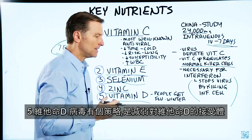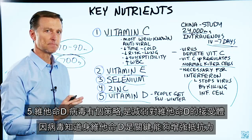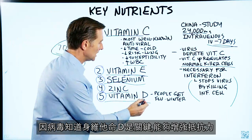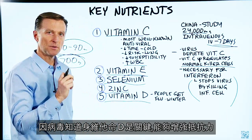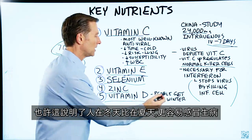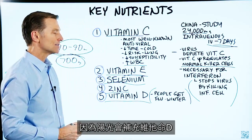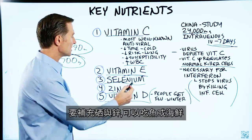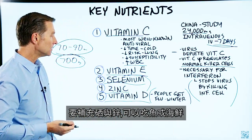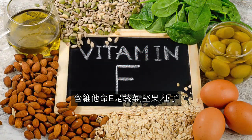Viruses have an interesting strategy to downregulate the vitamin D receptor, because apparently they somehow know that vitamin D is one of the key modulators for the immune system — it helps control it. This is probably one of the reasons why people get sick more with the flu in winter than during summer, because sunlight gives you vitamin D. As for getting selenium and zinc, you can get those from fish and seafood. Vitamin E comes from vegetables, nuts, and seeds.